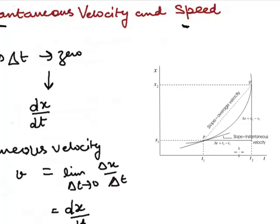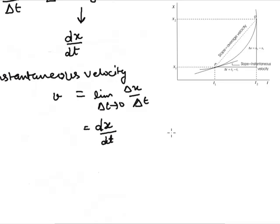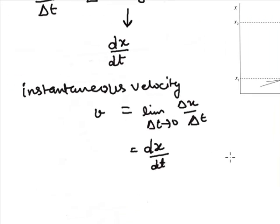Thus we can say that instantaneous velocity at any point of a coordinate-time graph is equal to the slope of the tangent to the graph at that point. Instantaneous speed, or speed, is the magnitude of the velocity. Unlike average velocity and average speed, the average speed over a finite interval of time may be greater than or equal to average velocity. The unit of average velocity, average speed, instantaneous velocity, or instantaneous speed is meter per second.